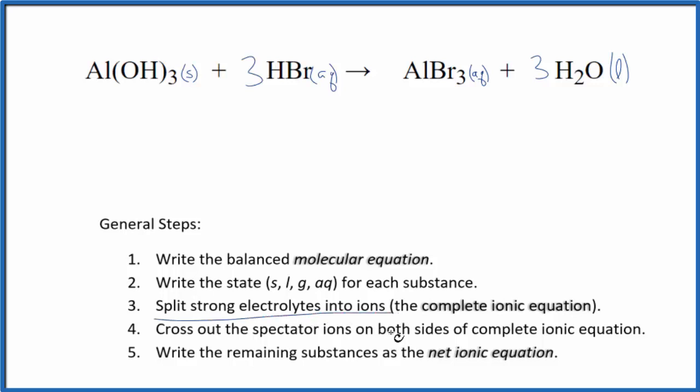Next we can split the strong electrolytes into their ions and that'll be the complete ionic equation. We can't split aluminum hydroxide apart since it's a solid. We don't split solids or liquids or gases apart in net ionic equations. So just Al(OH)3. I'll write the states at the end.